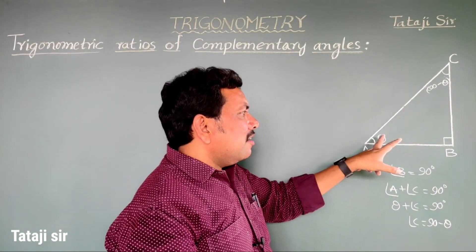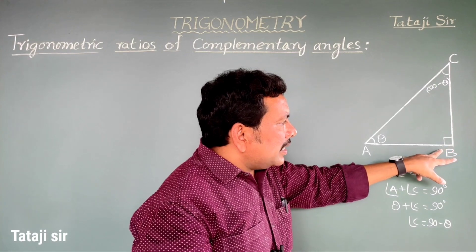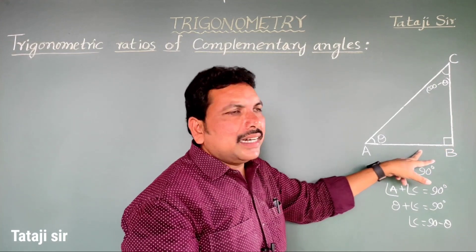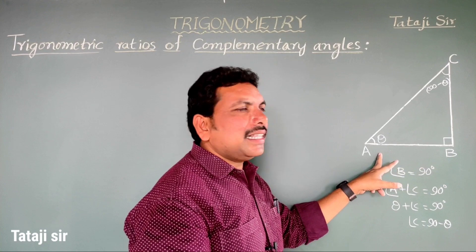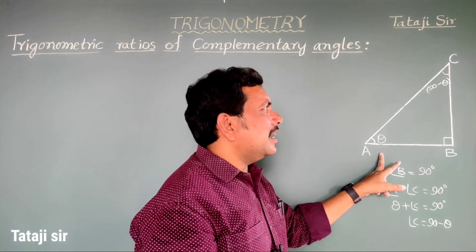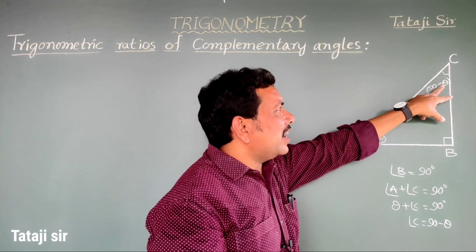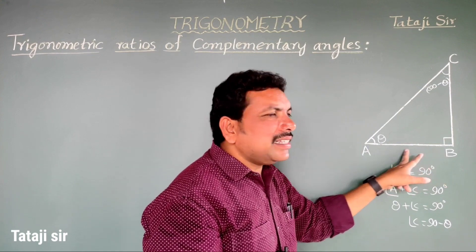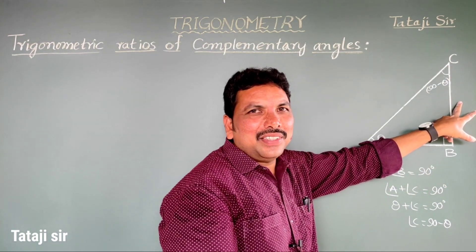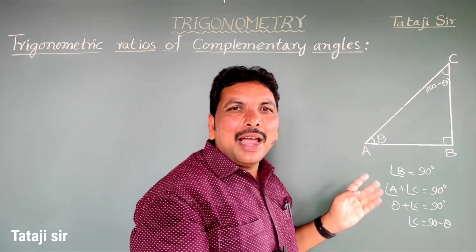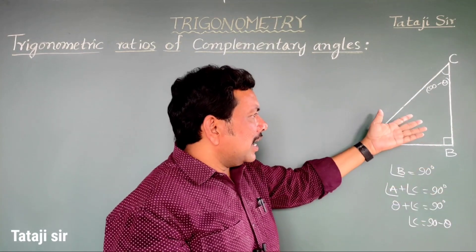In this right angle triangle, for theta, BC is the opposite side and AB is the adjacent side. For 90 minus theta, AB is the opposite side and BC is the adjacent side. The hypotenuse AC is common to both.